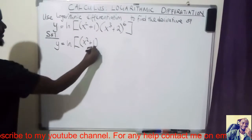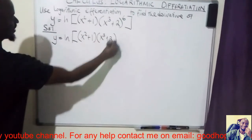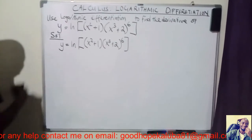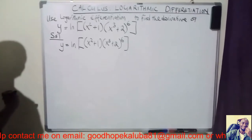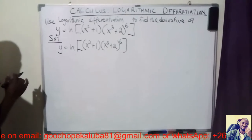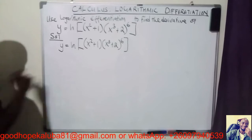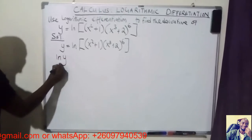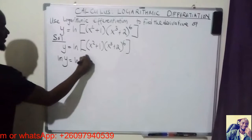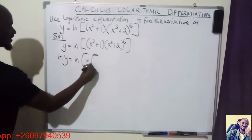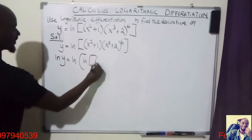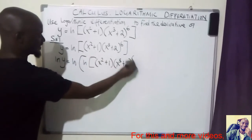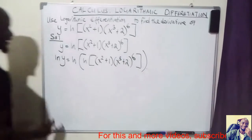What we are given is y is equal to (x² + 1) times (x³ + 2) to the power of 6. If you are asked to use logarithmic differentiation, the first thing you need to do is introduce natural logarithms on both sides. So I'll take ln of y equal to ln of (x² + 1)(x³ + 2)^6.